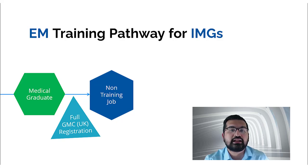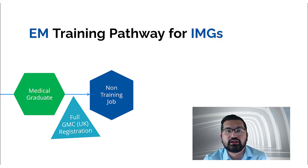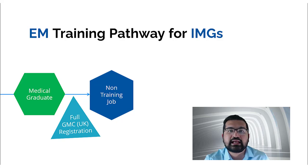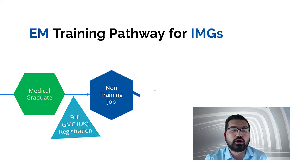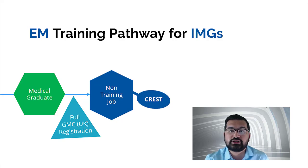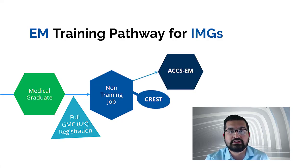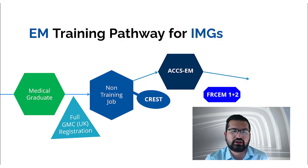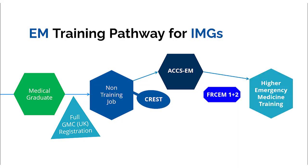For international medical graduates who have obtained full GMC registration, you can start as a non-training doctor. You then work towards getting your CREST form signed — CREST stands for Certificate of Readiness to Enter Specialty Training, which is the equivalent of foundation competencies. After getting the CREST form signed, you can join ACCS Emergency Medicine, and within that ACCS-EM training you complete FRCEM primary and intermediate before joining higher emergency medicine training.